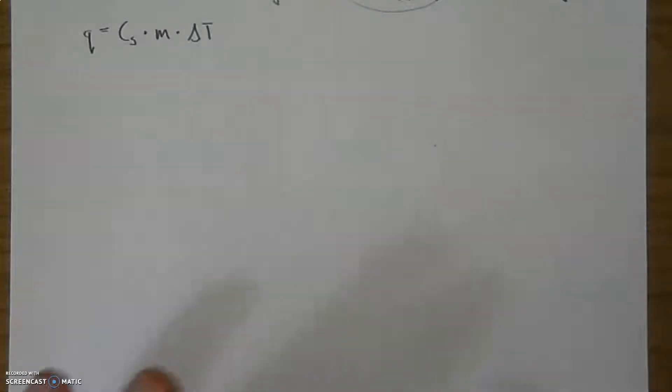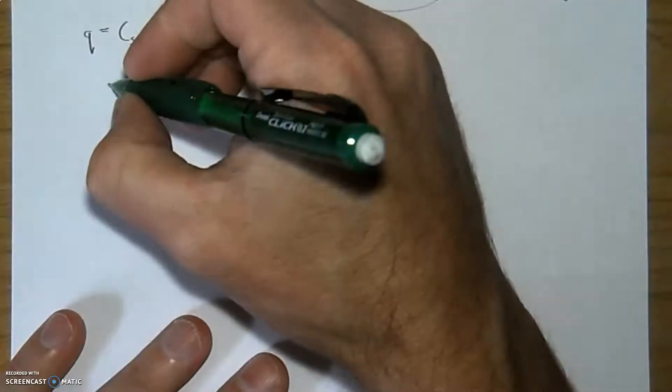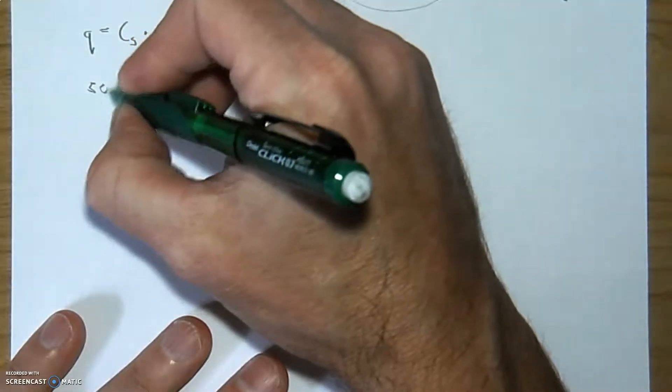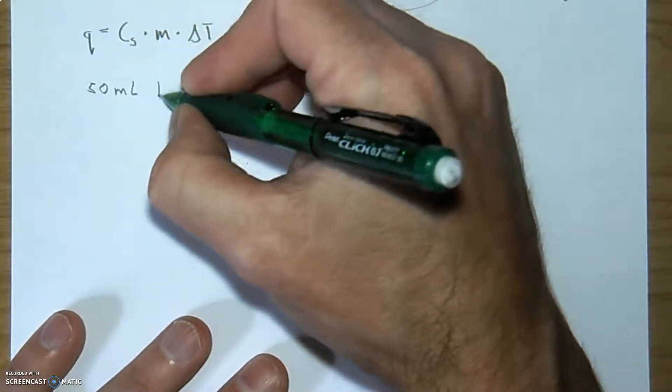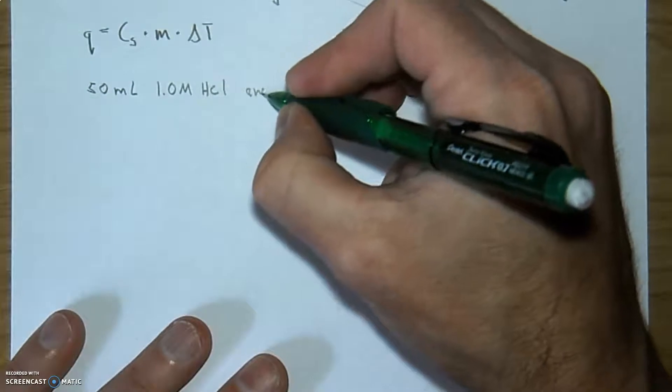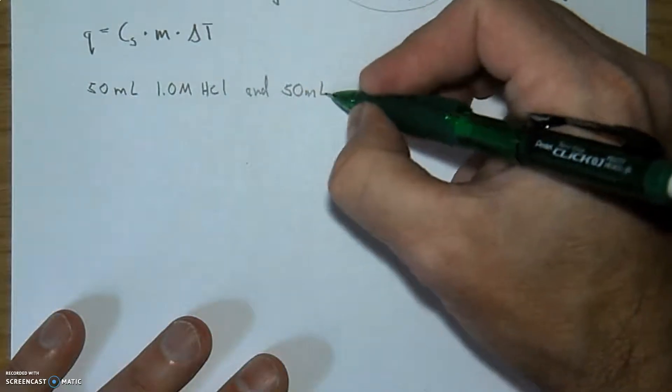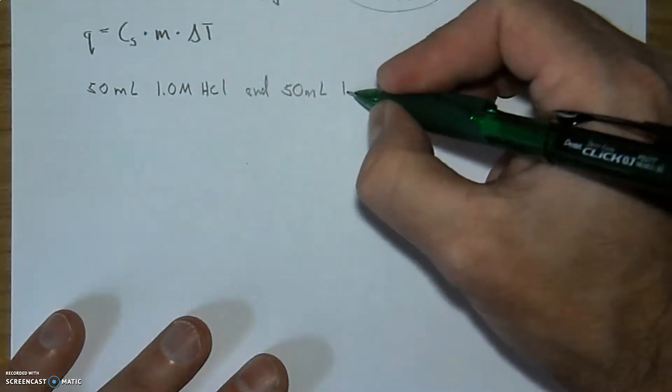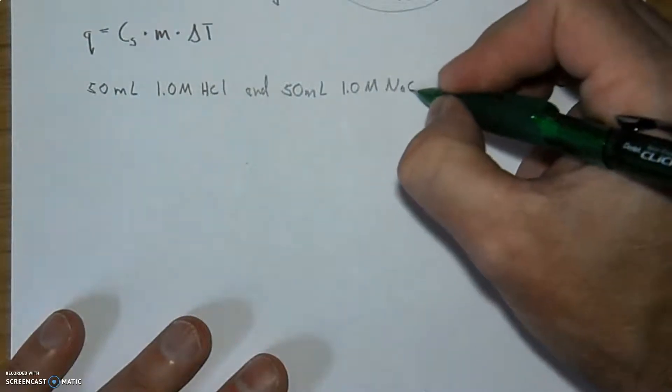Let's do a calorimetry problem, and we'll incorporate some of the things we've talked about so far and add a few more wrinkles. We will say, for example, this is going to be similar to a lab that we're going to run in class. We've got 50 milliliters of a 1.0 molarity HCl solution, and a very similar 50 milliliter sample of a 1.0 molarity NaOH solution.